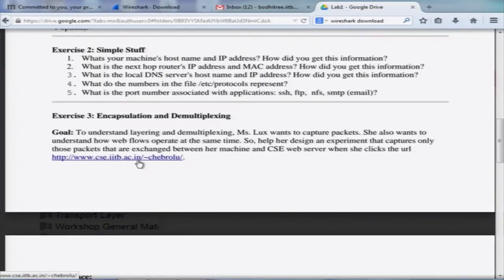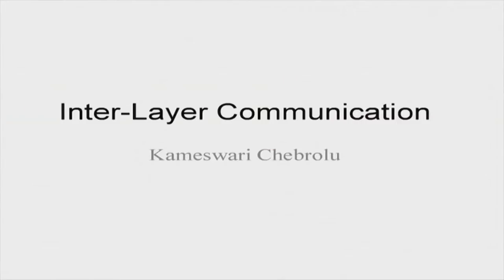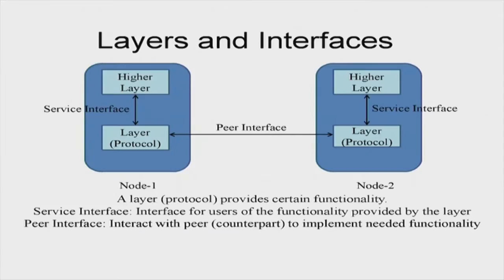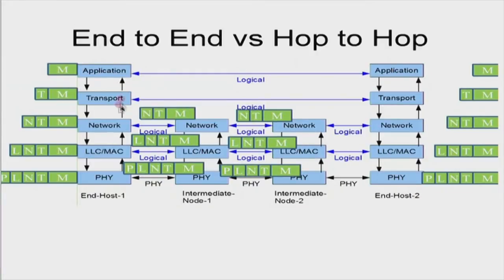We will also look at the concept of encapsulation and demultiplexing. These slides were covered as part of interlayer communication, under the introduction. The application generates messages — for example, a GET HTTP request — then the transport layer adds a header, the network layer adds a header, the link layer adds a header, the physical layer also adds a header, and then it goes to your next hop which could be a router, and so on all the way to the other end.